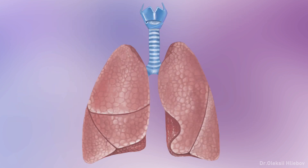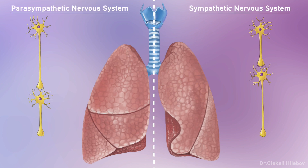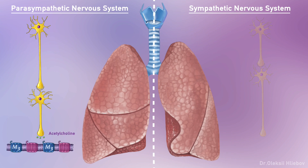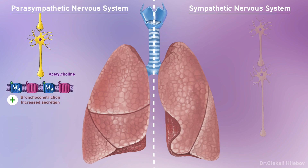Lungs receive innervation from both sympathetic and parasympathetic nervous systems. Postganglionic fibers of the parasympathetic nervous system release acetylcholine, and acetylcholine interacts with M3 receptors, causing bronchoconstriction and increasing secretion of bronchial glands. So, rising in parasympathetic system tone is associated with bronchoconstriction, and decreased tone of the parasympathetic nervous system is associated with bronchodilation — this is how muscarinic antagonists work.